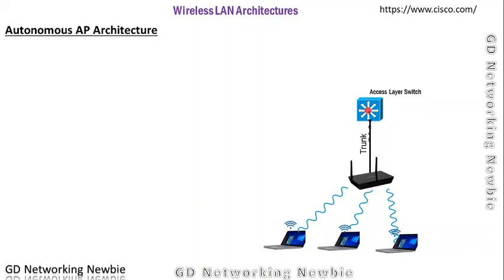In this video we are going to discuss wireless LAN architecture. Architecture means a layout of something — we see building architectures, computer architecture, software architecture — but today we are going to discuss access point architecture: how access points are connected with each other in a typical wireless LAN.